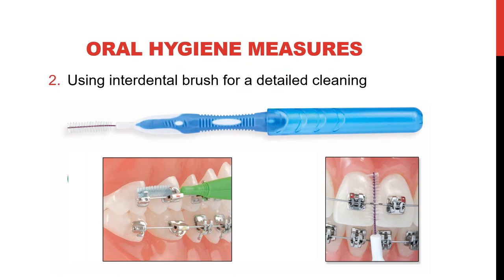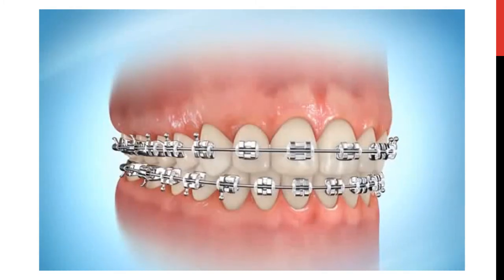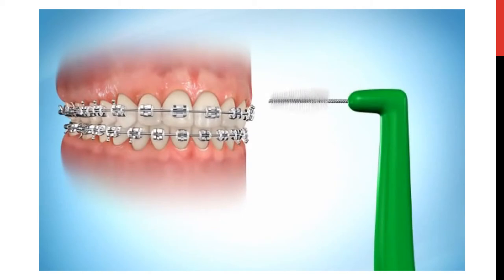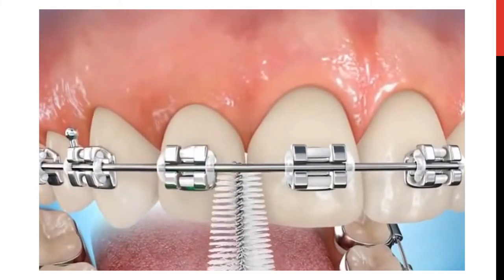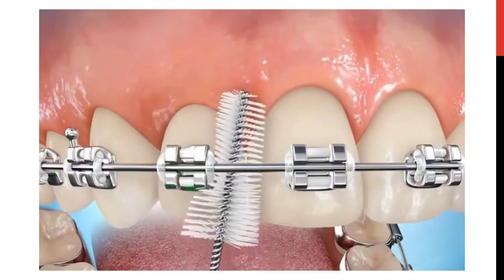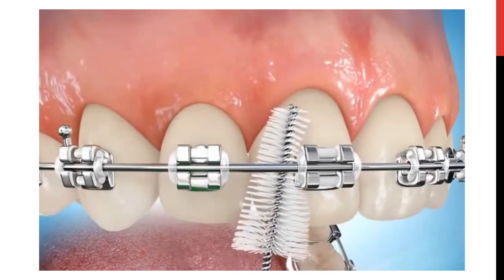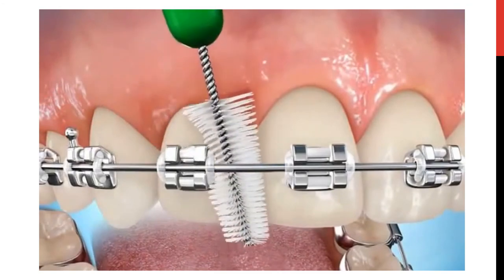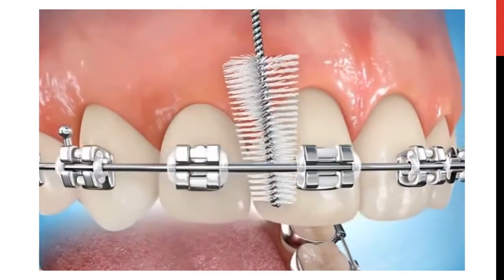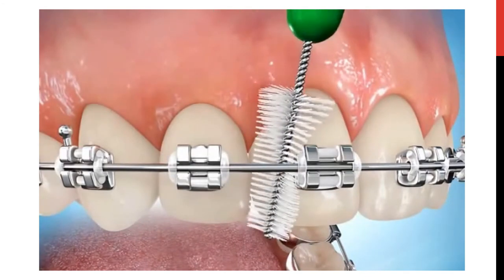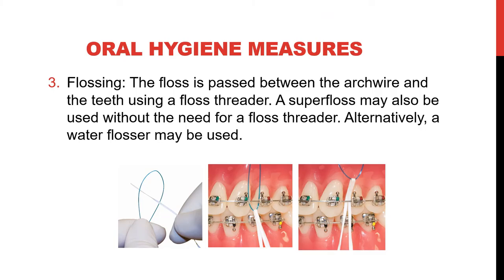An interdental brush should be used for detailed cleaning — for cleaning between the teeth and cleaning between the teeth and the appliance. This short video demonstrates how an interdental brush is used. An interdental brush may be straight or angled. It is inserted in the interdental region and the area between the teeth and between the teeth and the appliance is cleaned. An interdental brush should be used once daily, unlike the toothbrush which should be used after each meal. Flossing is also required. The floss is passed between the arch wire and the teeth using a floss threader.